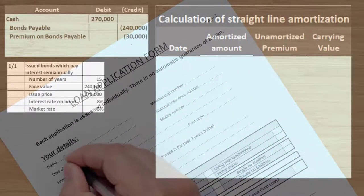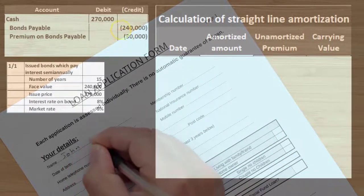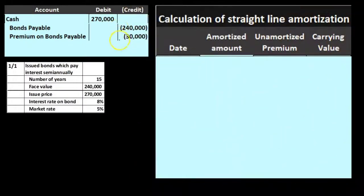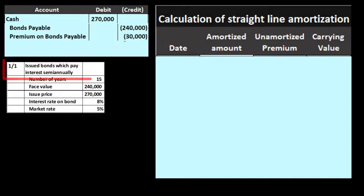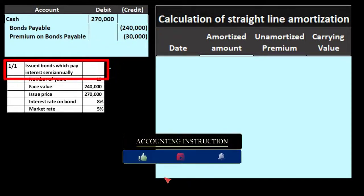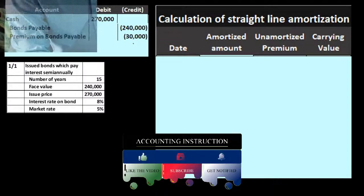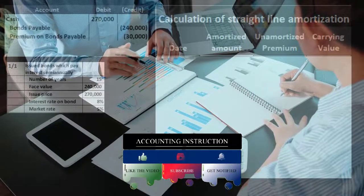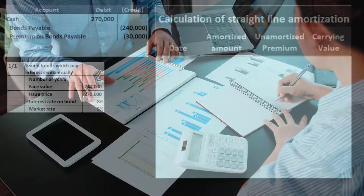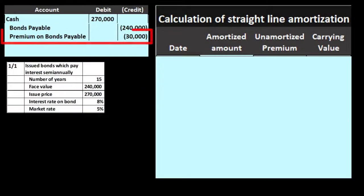We need to get rid of the premium throughout the life of the loan — we're not going to pay it back at maturity. What we'll do is reduce it at the same points we make interest payments, which in this case is semi-annually. We're going to allocate this premium out to interest expense on the income statement, since it's really a result of the interest rates being different. Think of this as similar to depreciation.